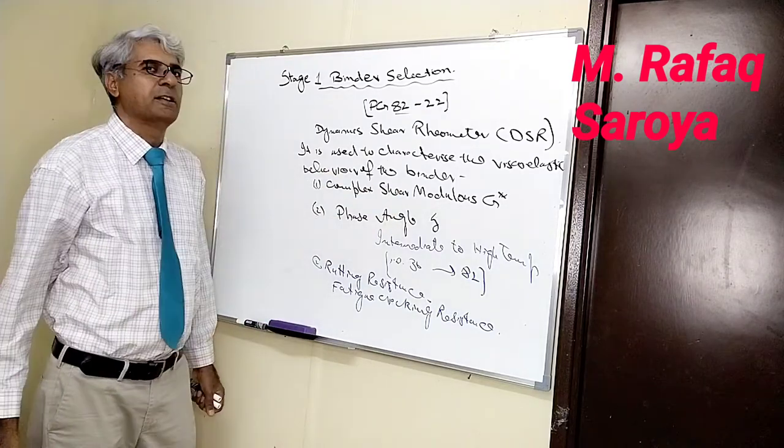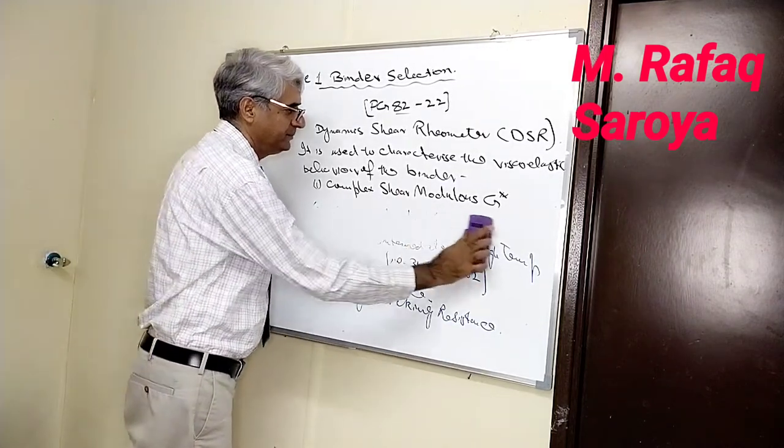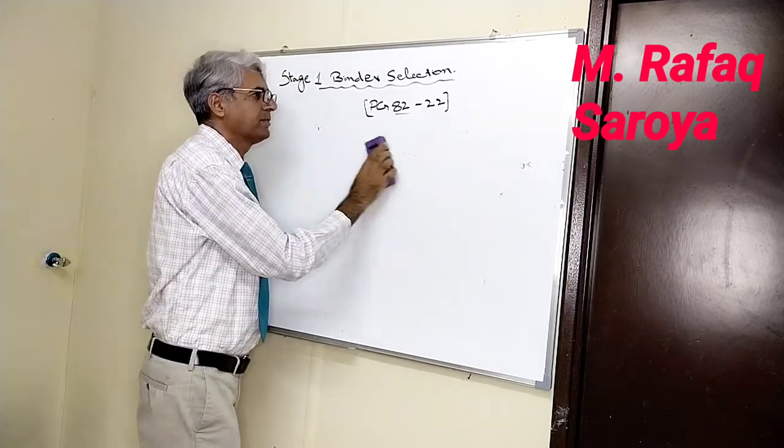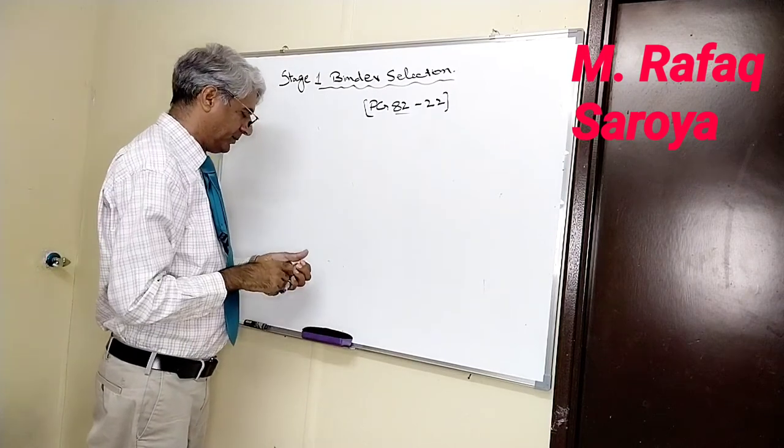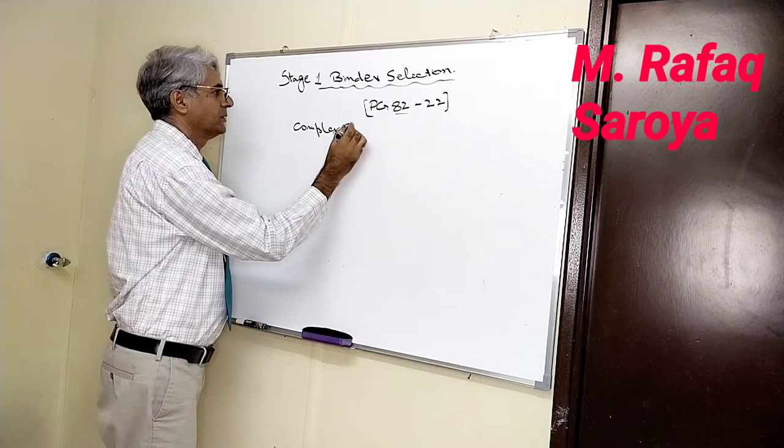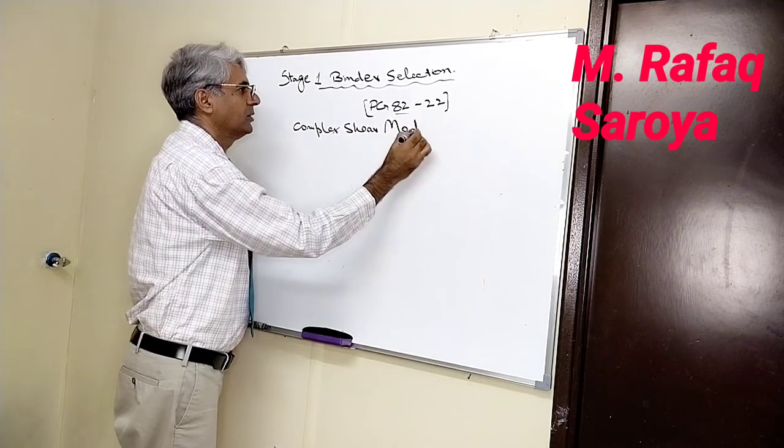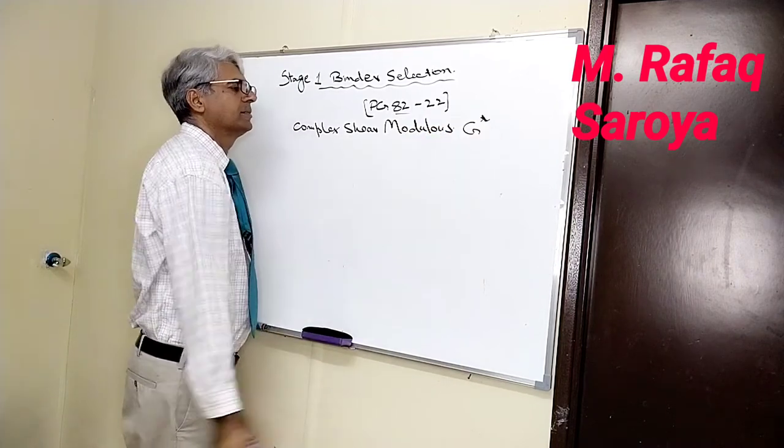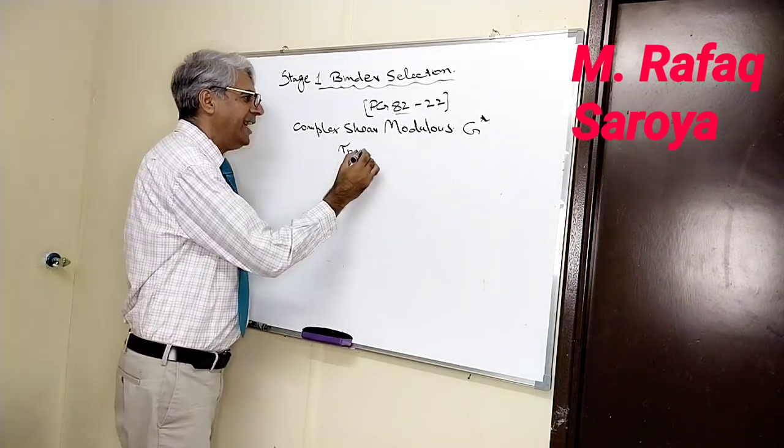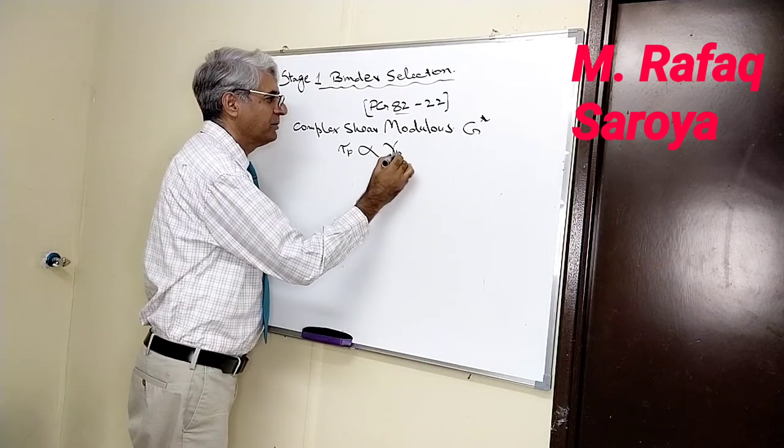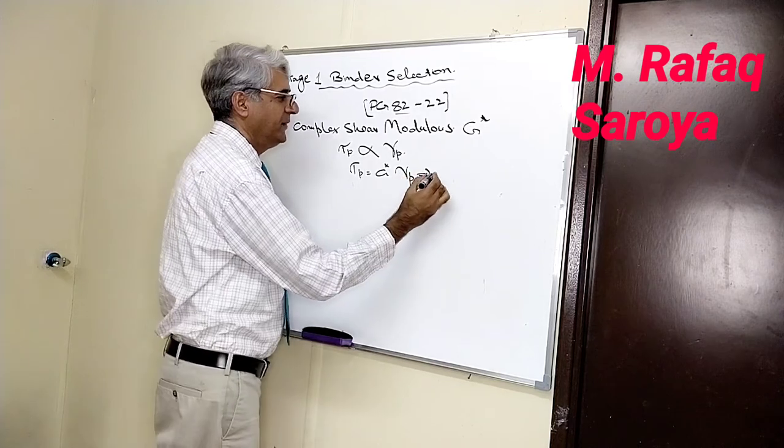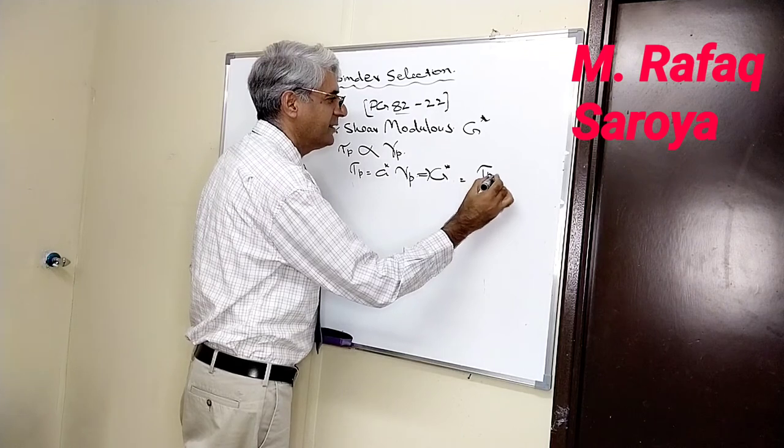Now let me give you the definition of this complex shear modulus and let me give you the definition of this phase angle. We can say that peak stress is being applied, tau peak means peak stress. As more stress is being applied, more strain is being produced. G star into gamma.